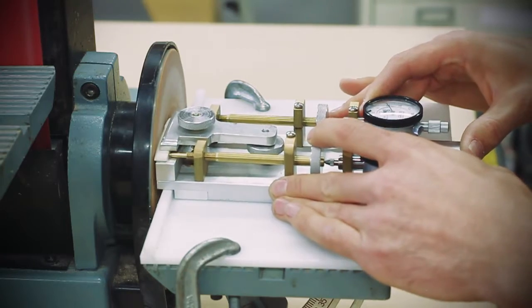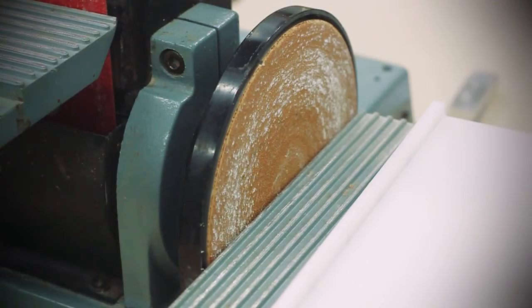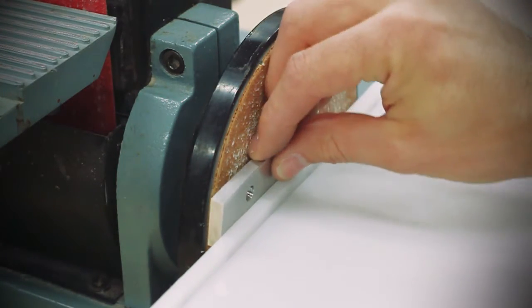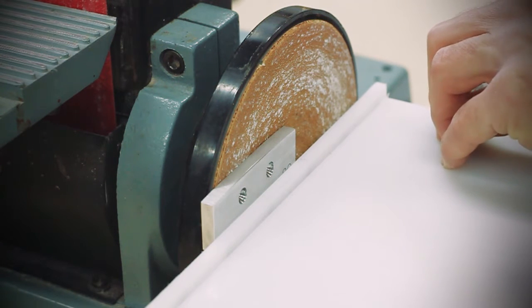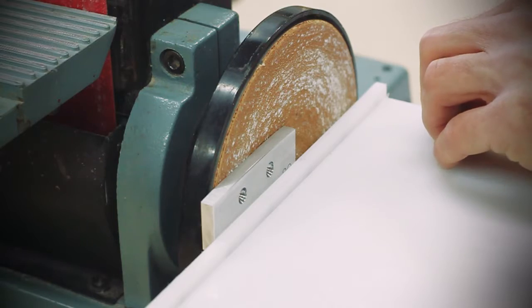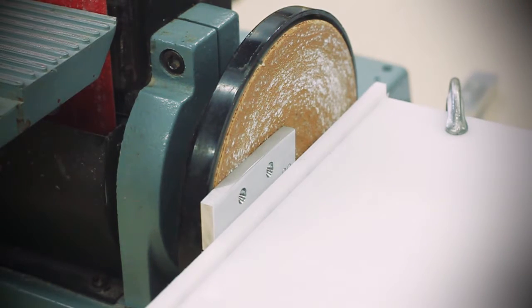The tool rides along a fence attached to a common disc sander. The fence is 1 ¼ inch wide and should be set 1 ¼ inch from the face of the sanding disc. This is easily accomplished by using one of the templates, which is ¼ inch thick, as a spacer when clamping the fence to the table.